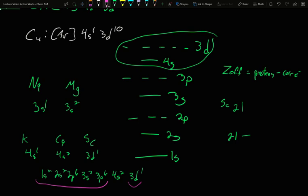When I go from calcium to scandium, so calcium had 20 protons. So it was 20 minus all the earlier electrons. Well, those earlier electrons are 2, 4, 10, 12, 18.